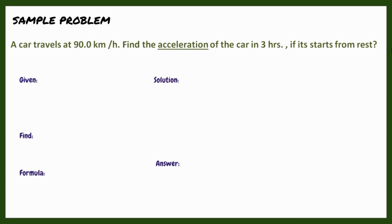In this next problem, take note of the phrase 'from at rest' — that means the car is initially at rest before it travels to 90 kilometers per hour. What are we going to find? The acceleration. Just like in our previous video lesson, we solve a physics problem by identifying the given, the unknown, the formula, the solution, and the final answer.